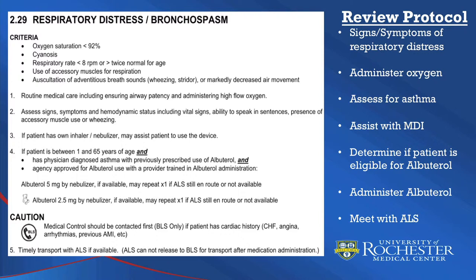If the patient appears to have asthma and has their own inhaler or nebulizer, you may assist the patient in using the device. Next, if required, determine if the patient is eligible for albuterol. If the patient meets the criteria in the protocol, you may administer the appropriate dose of albuterol for the patient's age. Remember, medical control should be contacted first if the patient has a cardiac history such as congestive heart failure, angina, arrhythmias, or a previous heart attack.